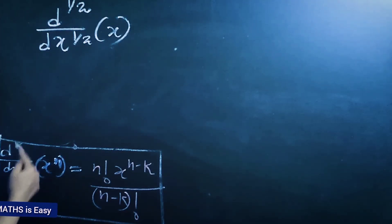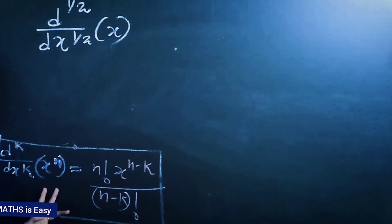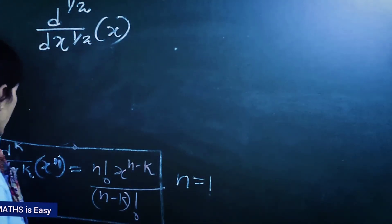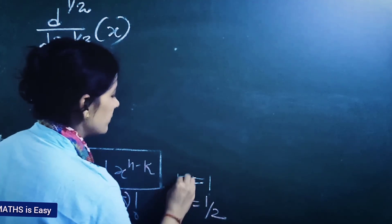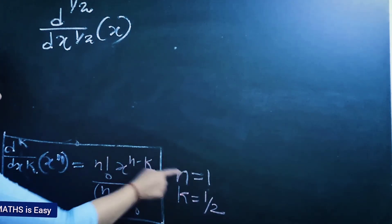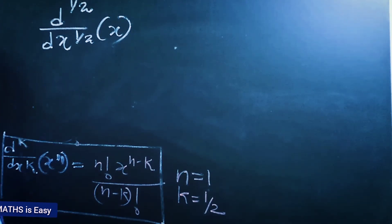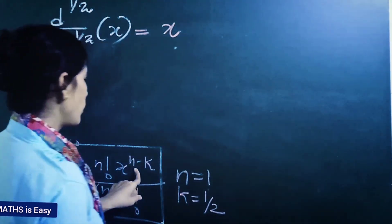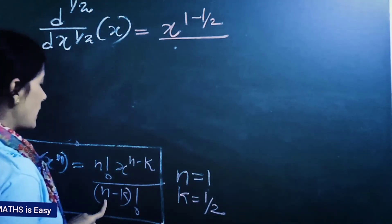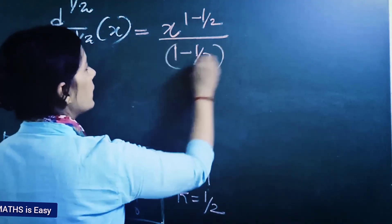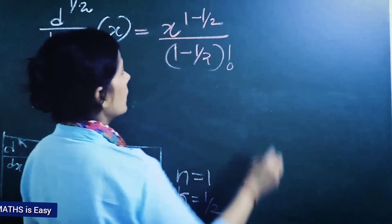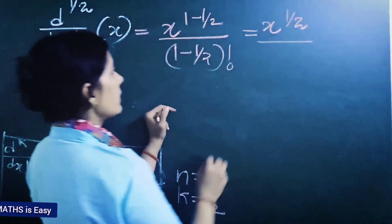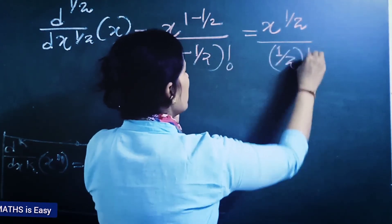Now we can use this relation to find the half derivative of x. We want the function x, so we put n equals 1 and k equals one-half. Substituting: we get 1 factorial divided by (1 - 1/2) factorial, times x raised to (1 - 1/2), which is x raised to one-half divided by (one-half) factorial.